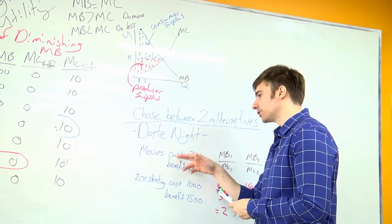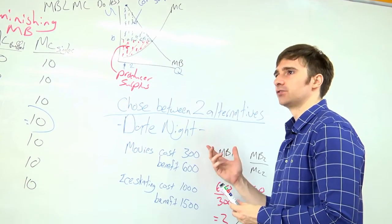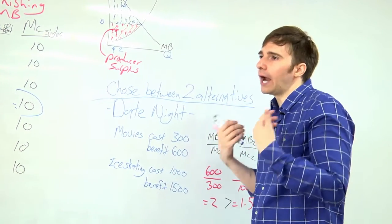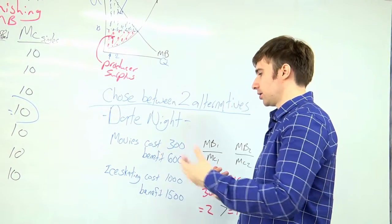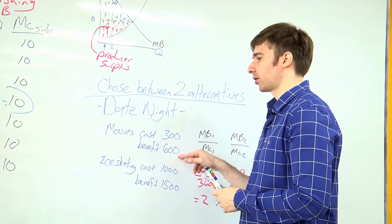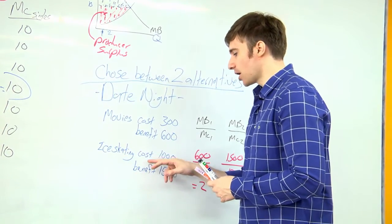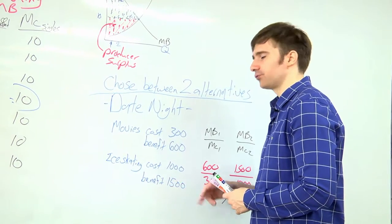Go to the movies, we have a cost of three hundred for the movie tickets, a benefit of your happiness quantified in dollars and your friend's benefit. So together you'd have a benefit of six hundred. Ice skating you have a cost of a thousand, and a benefit for the two of you of fifteen hundred.